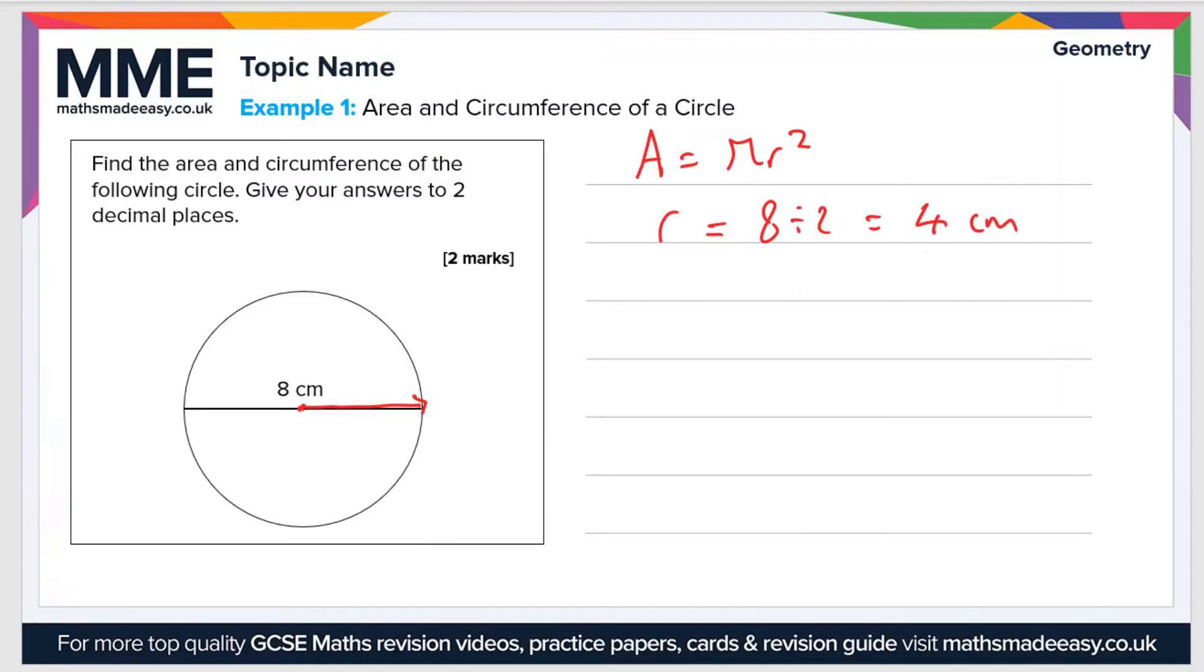So the area equals pi times 4 squared, which equals 16 pi. Sometimes this would be enough if the question said leave your answer in terms of pi, then this would be fine. But in this case the question says give your answer to two decimal places, so let's use a calculator here.